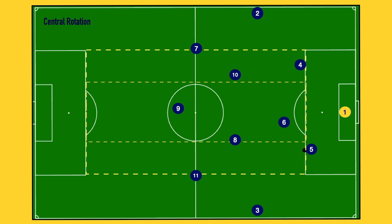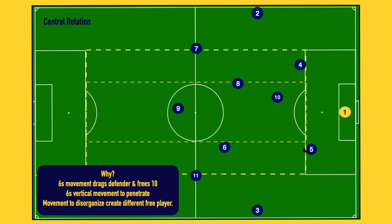The ball now transfers across to the five. Now the six can roll back the other way, but in this case we've asked the six to attack the space going forward. The six makes that vertical run, and the ten now slides into that same diagonal pocket space that the six usually creates with opposite movement, to now be able to get on the ball. The six's movement can drag a defender, especially in a man marking situation, to free up the ten.